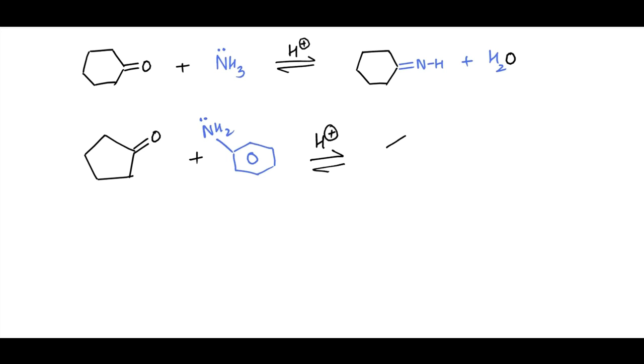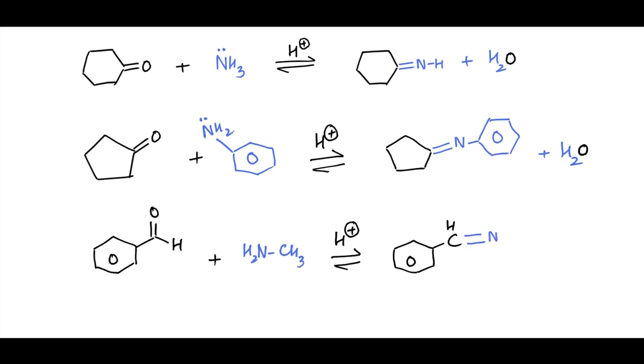The following examples show some typical imine-forming reactions. Cyclohexanone reacts with ammonia to form cyclohexanone imine. Cyclohexanone reacts with aniline to form cyclopentanone phenylimine. Benzaldehyde reacts with methylamine to form benzaldehyde methylimine.